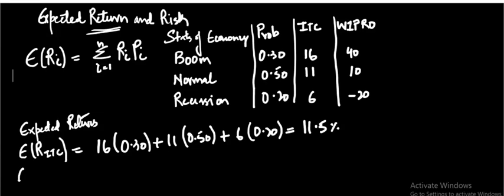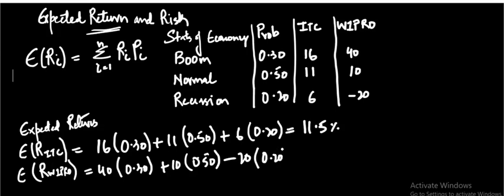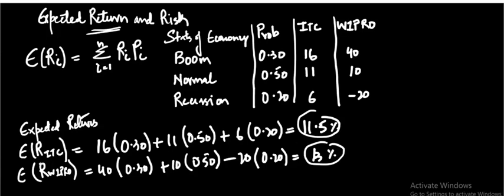In a similar manner, I can calculate the expected return for Wipro by multiplying each return with its respective probability. Notice that there is a negative return here. The total expected return for Wipro comes out to 13 percent. So the expected return for ITC is 11.5 percent and for Wipro it is 13 percent.